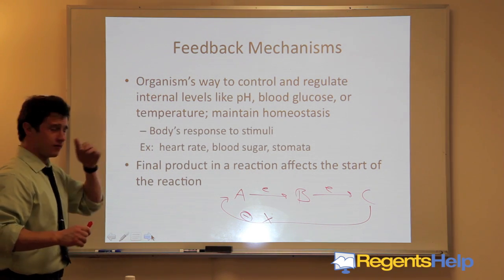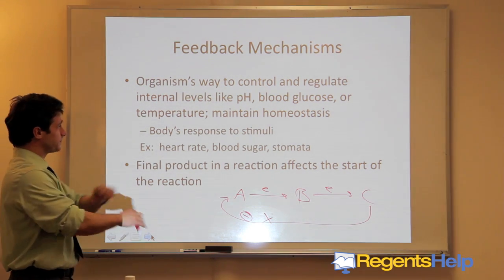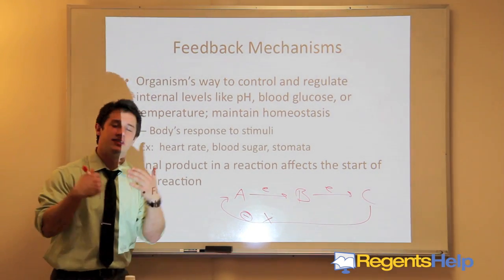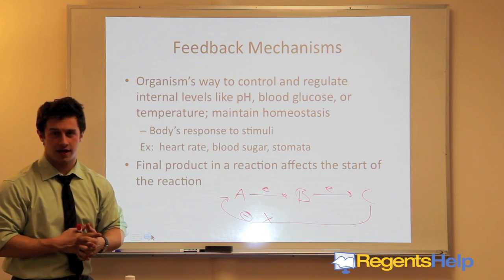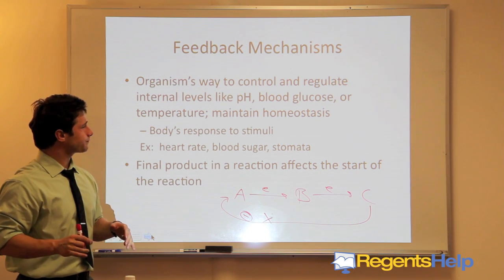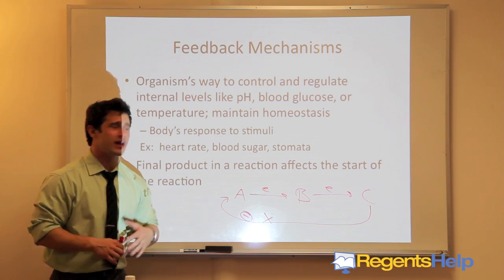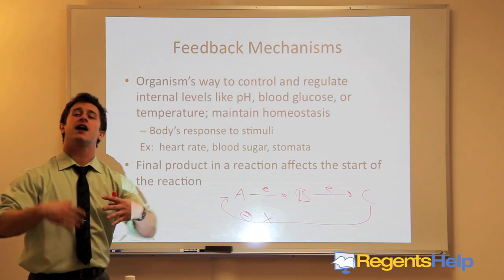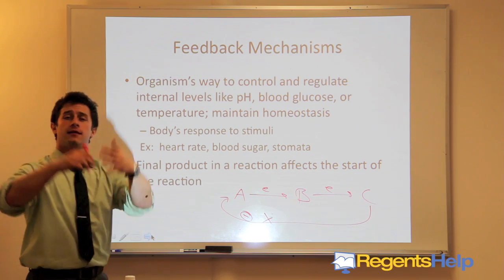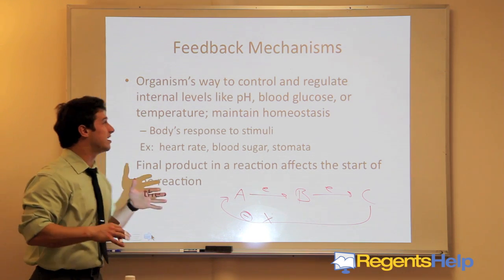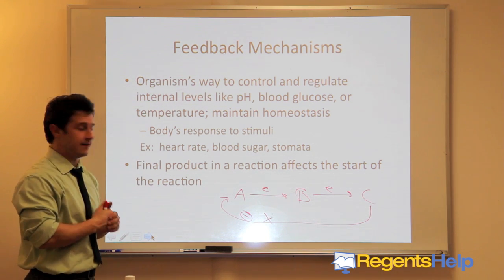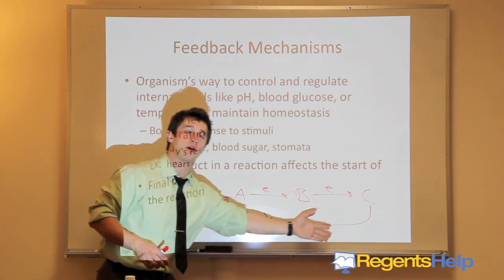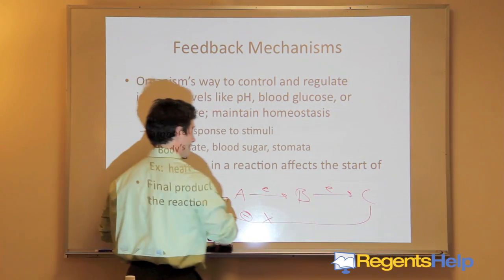Another feedback mechanism example is breathing rate. When your body increases physical activity, you have a higher demand for oxygen in your cells and need to speed up your breathing. Breathing speeds up, the oxygen gets delivered, and once that oxygen level is met, breathing comes back down. Negative feedback is a process where the final product goes back and shuts off the beginning process.